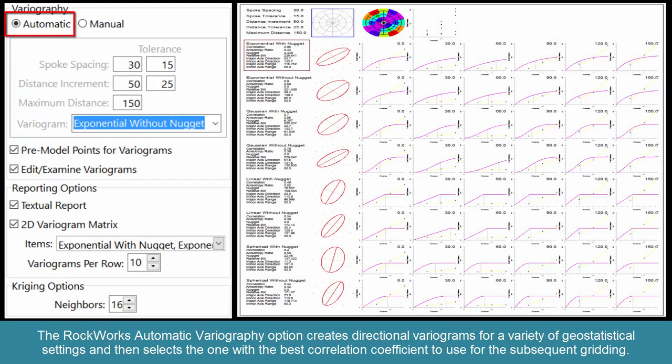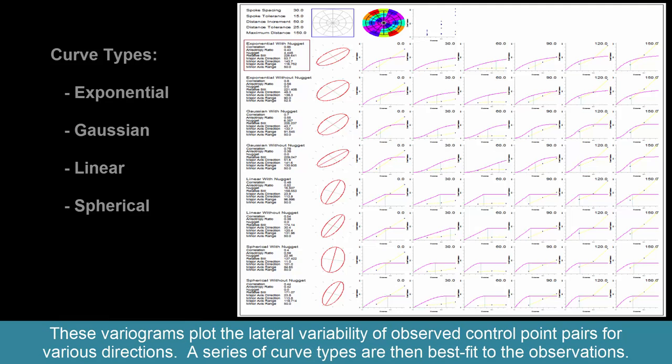In practice, the RockWorks automatic variography option creates these directional variograms for a variety of geostatistical settings and then selects the one with the best correlation coefficient to use for the subsequent gridding. These variograms plot the lateral variability of observed control point pairs for various directions.